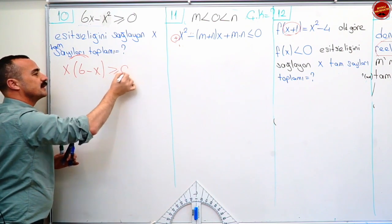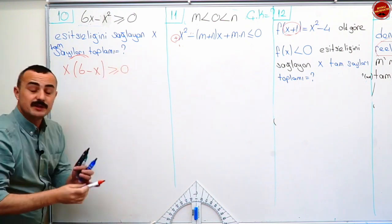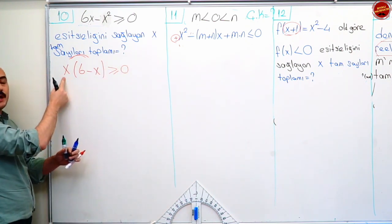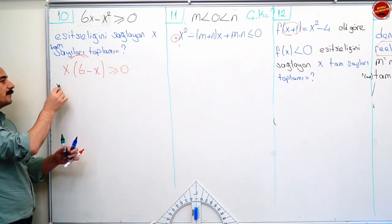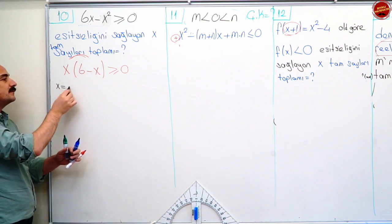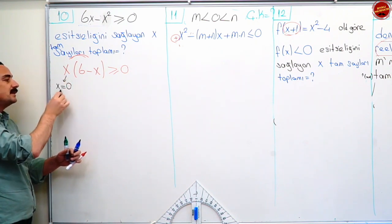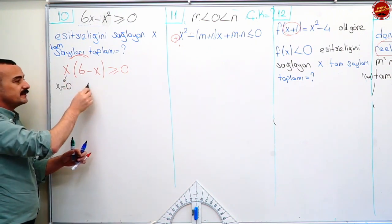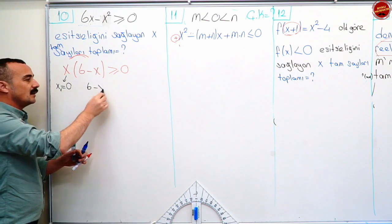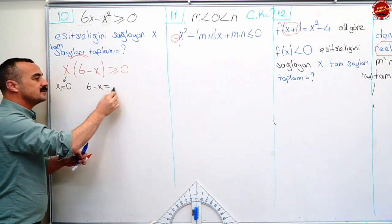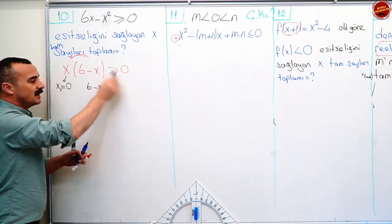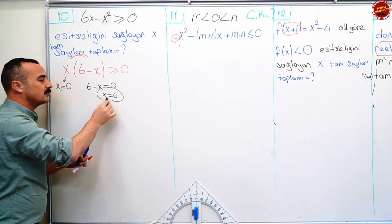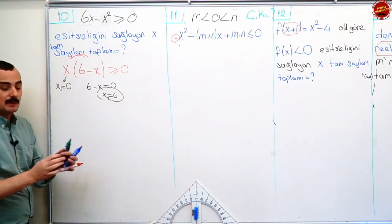Büyük eşit sıfır. Şimdi sıfır yapan değerleri bulmam gerekiyor. Hemen bulalım sıfır yapan değeri. Bunu sıfır yapan ilk değer birinci kök sıfır. Burayı sıfır yapan altı eksi x eşittir sıfır için x eşittir altı. Bak kökleri buldum.